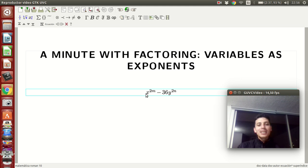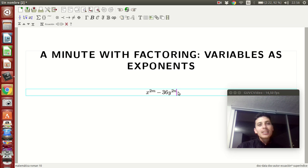Let's see the example. It says x to the 2n minus 36y to the 2n. The first thing you have to do is check how many terms we have to see what method you're going to apply. Here you can see that we have two terms, so we have to apply special factoring formulas.